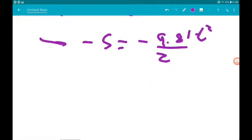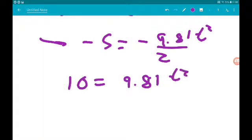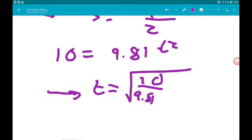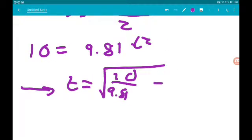We can cancel our negative. We can say 10 is 9.81 t squared. Therefore, t is the square root of 10 over 9.81, which gives us 1.01 seconds.